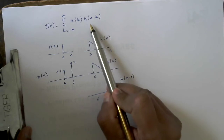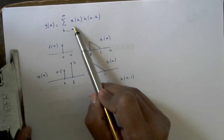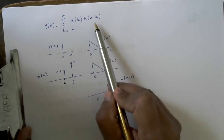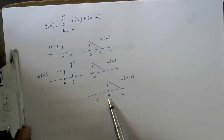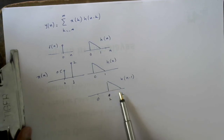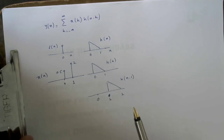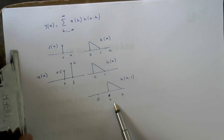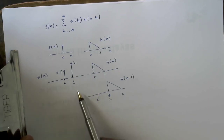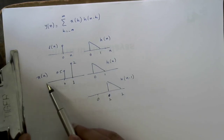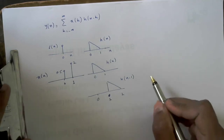Whenever you shift h(n) by k, you have to scale it by x(k). So if you are shifting h(n) here, it has to be scaled by the corresponding value of x at k. Here k is equal to 1, so the value by which this has to be scaled is 2, because x(1) is 2.